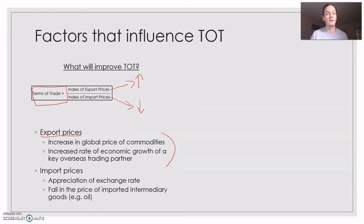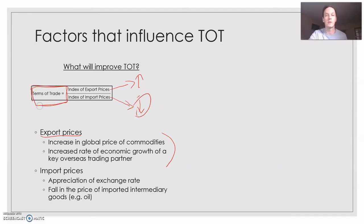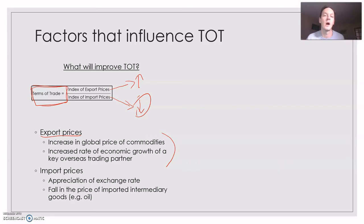The second thing is that import prices can also improve the terms of trade. Import prices need to fall in order for the terms of trade to go up. What would cause import prices to fall? Well, we could appreciate the exchange rate, which makes our imports cheaper, or there could be a fall in the price of an imported intermediary good like oil. Both of those things will cause import prices to fall and therefore terms of trade to rise.